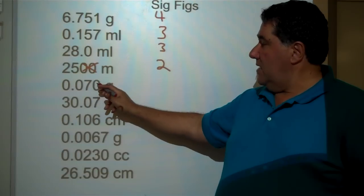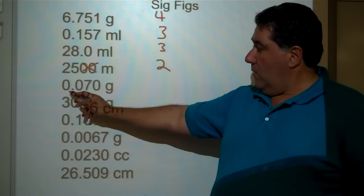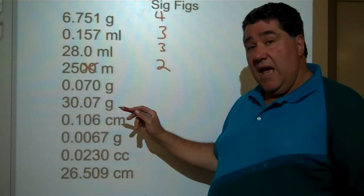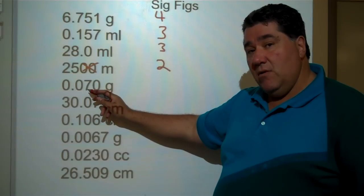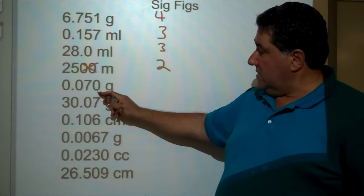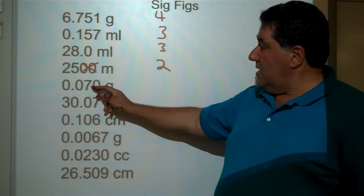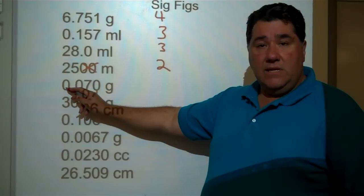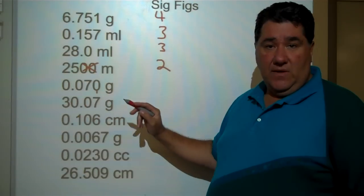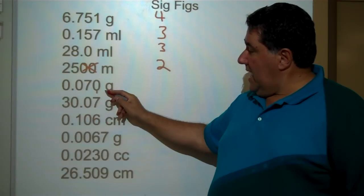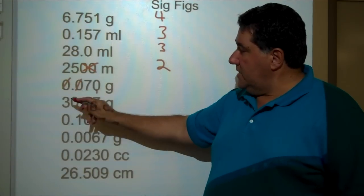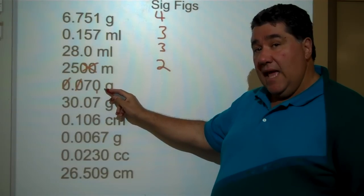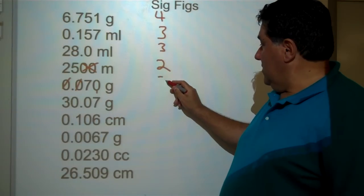0.0270 grams. We've got a lot of zeros here and there is a decimal point with zeros after it. But is there an ending zero after the decimal point? Yes, right here. The number seven is also present. The two leading zeros after the decimal are not significant — they don't fall between two significant digits and they're not at the end. The seven and the final zero at the end are significant. The total is two significant figures.